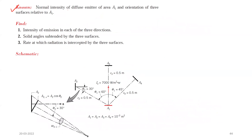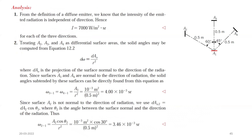What is known: the normal intensity of the diffuse emitter of area a1 and the orientation of the three surfaces relative to a1. From the definition of a diffuse emitter, intensity is independent of direction, hence I = 7000 W/m²·sr. This is the answer for each of the three directions.